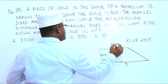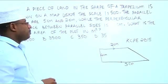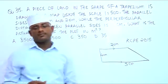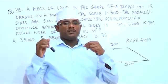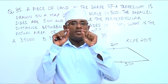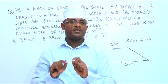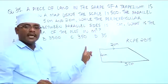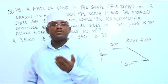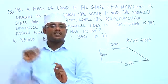What is the actual area of the trapezium or the plot? What does it mean by 1 is to 500? It means when you measure on that map, assuming you measured a distance of 1 centimeter, then the actual distance is going to be 500 times what you have measured.